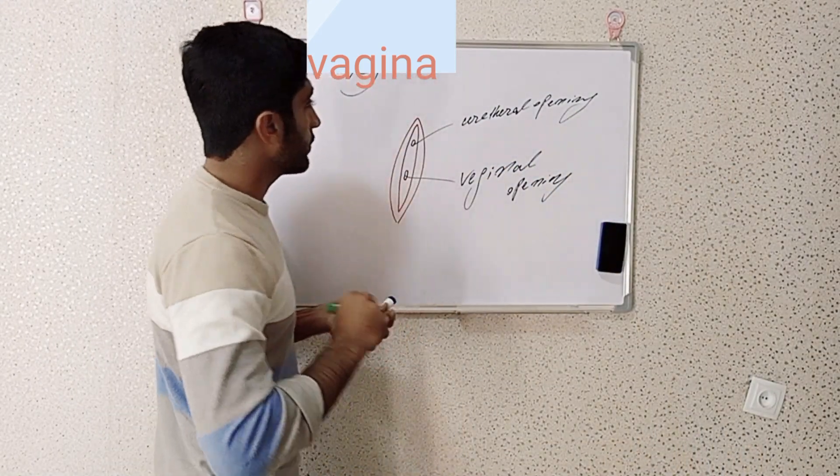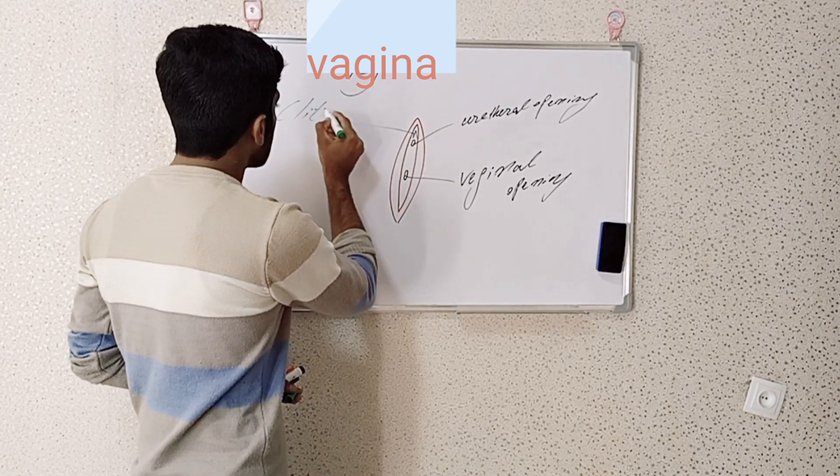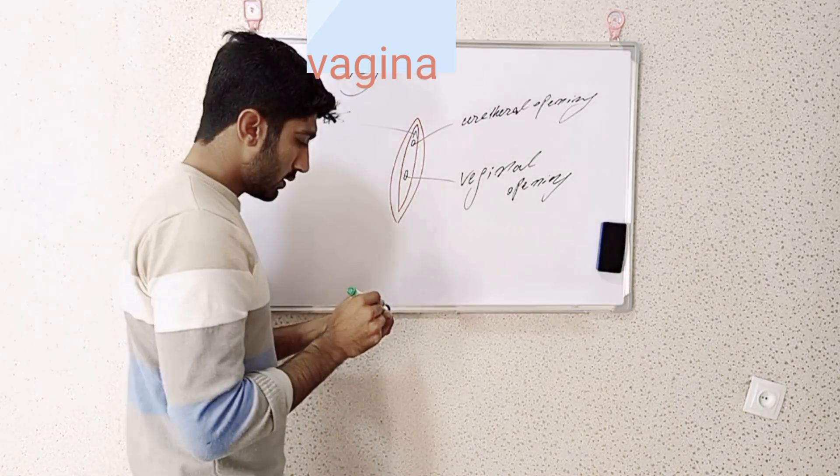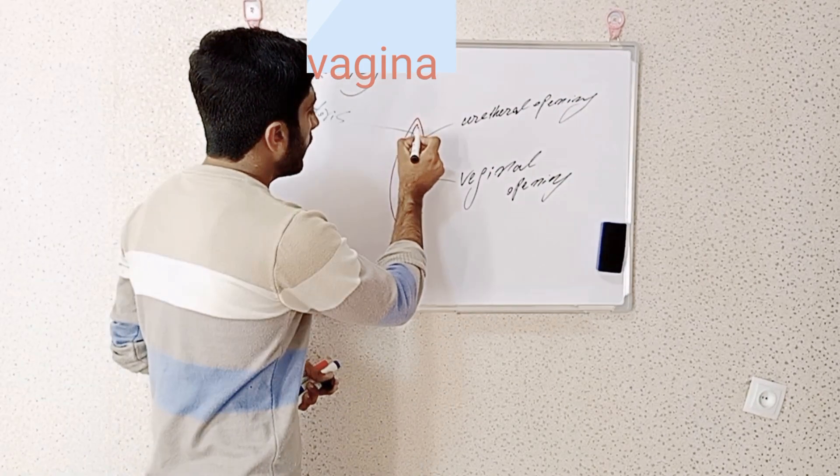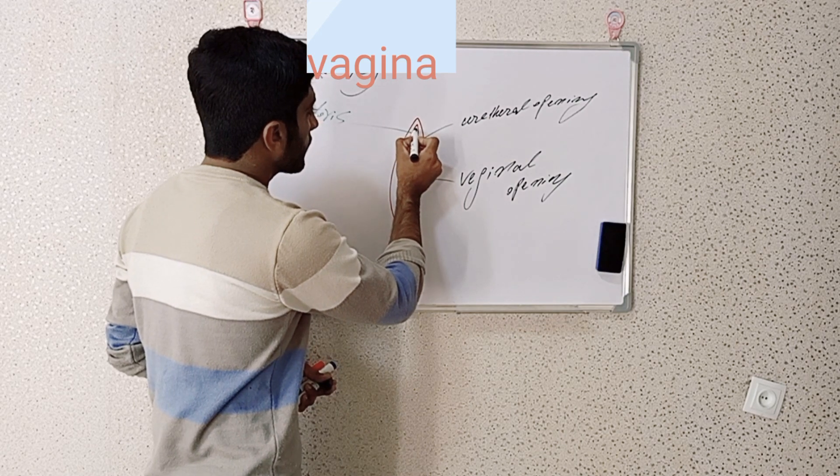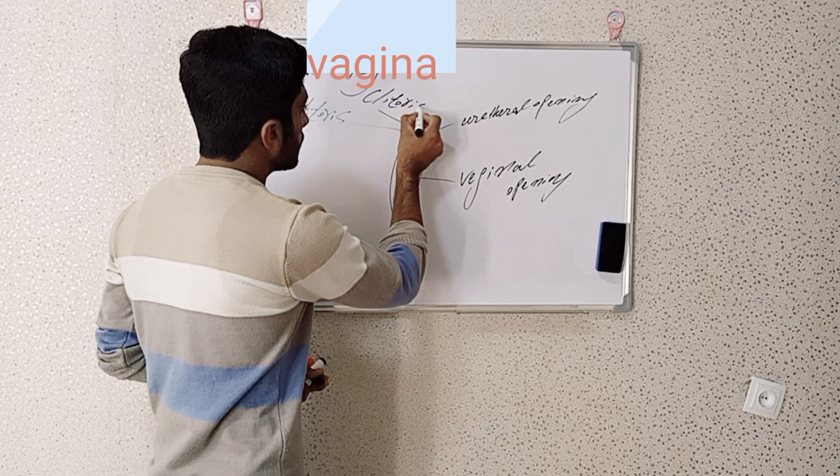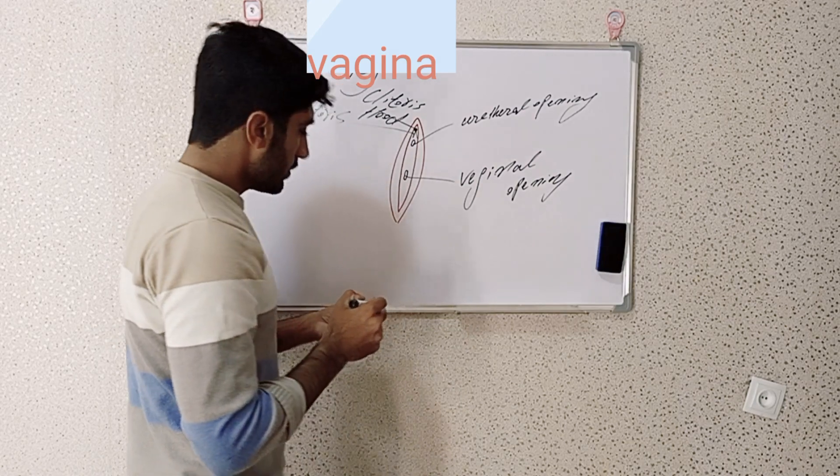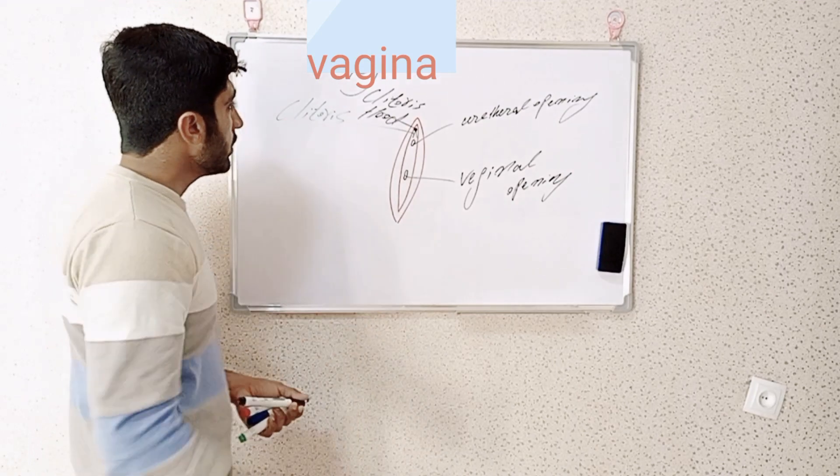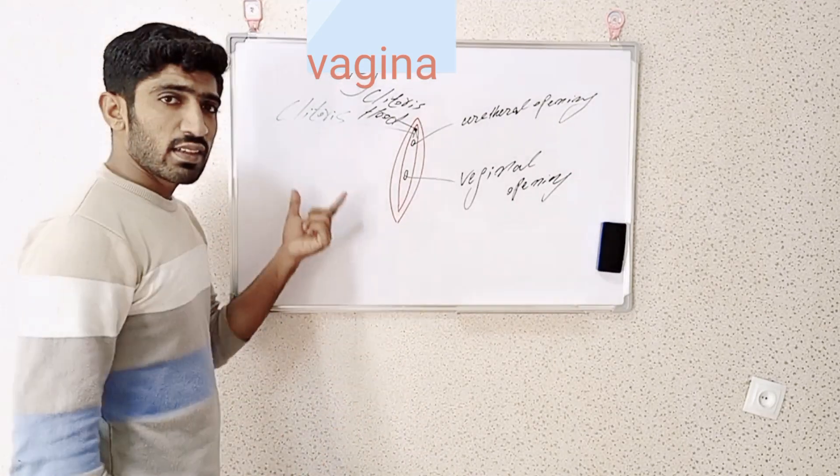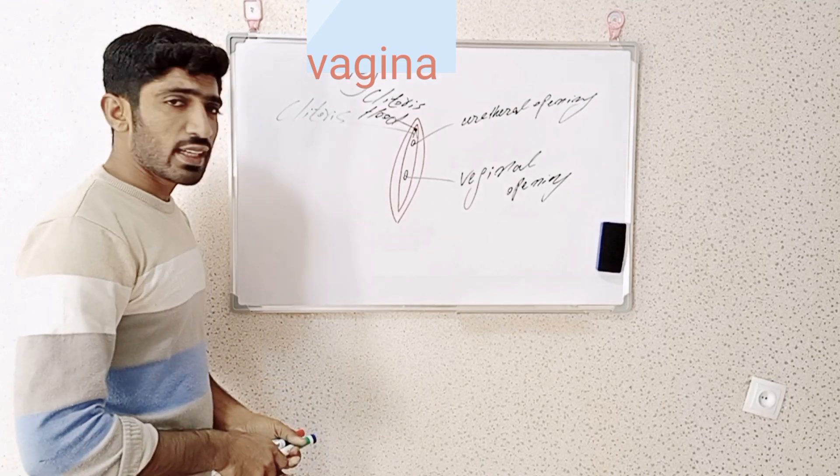On the upper side of the urethral opening, a bulb-shaped structure is present which is called the clitoris. On the upper side of the clitoris, the clitoris hood is present. The clitoris is also called the female penis. It is an erogenous organ of the female and plays a key role in sexual pleasure.